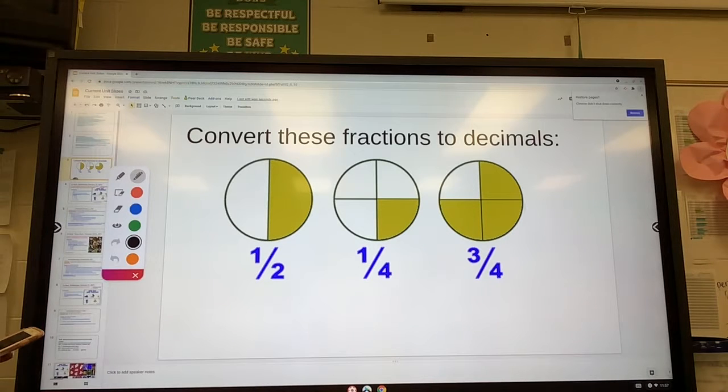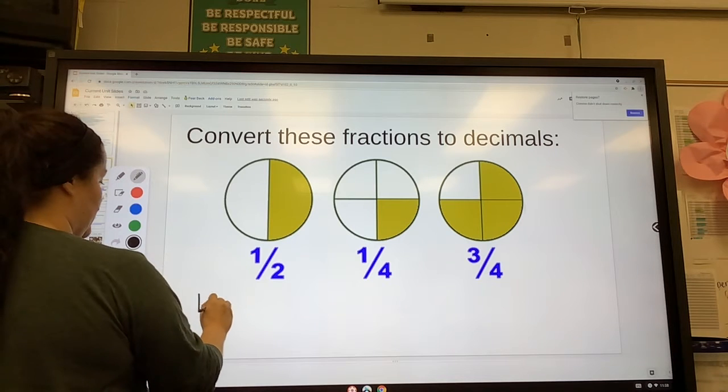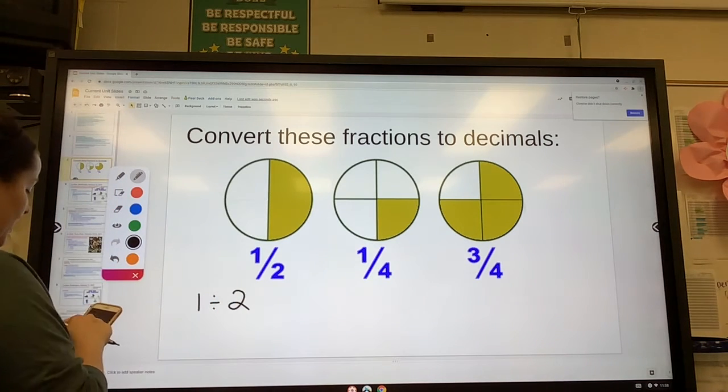In this video, we're going to be talking about how to convert fractions to decimals using a calculator. That's the easiest method. All you do is you take the numerator and you divide by the denominator, so the top divided by the bottom.